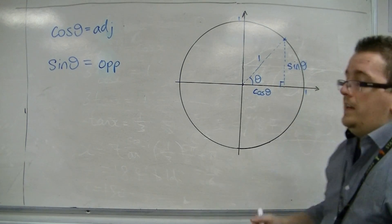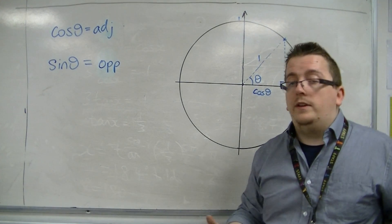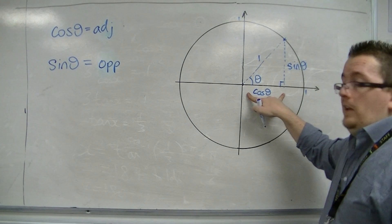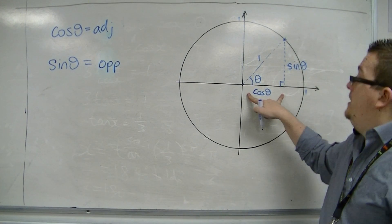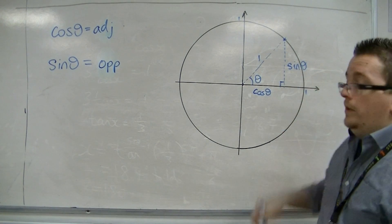So in other words, if theta was 30 degrees, then the base of the triangle is cos of 30, and the height of the triangle is sine of 30.